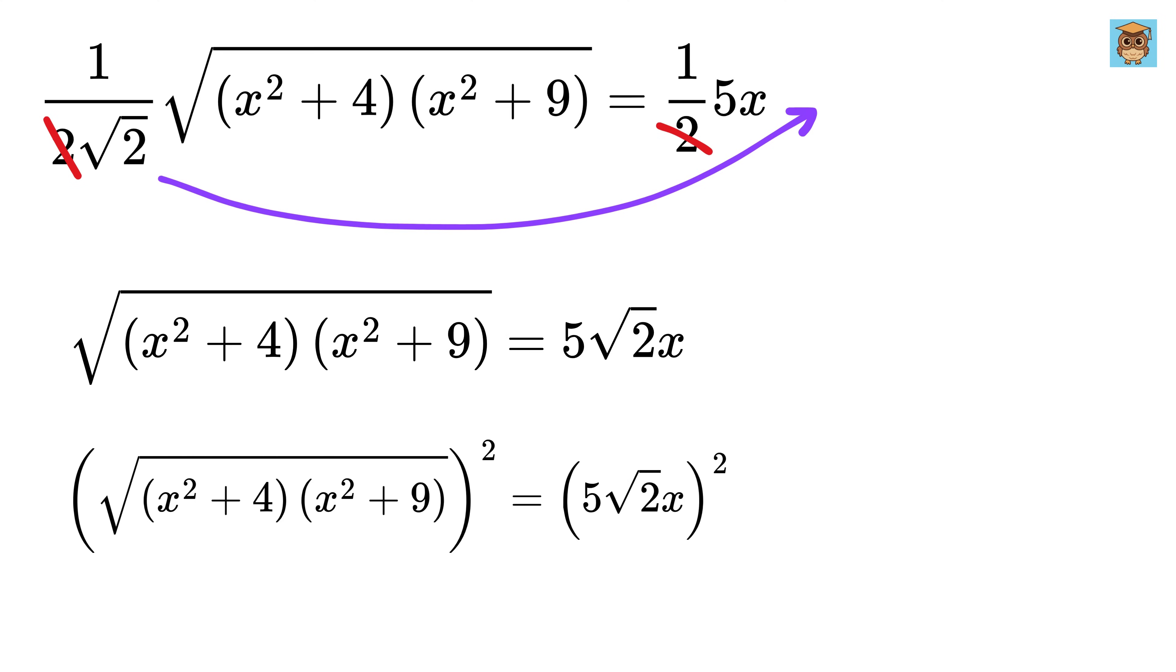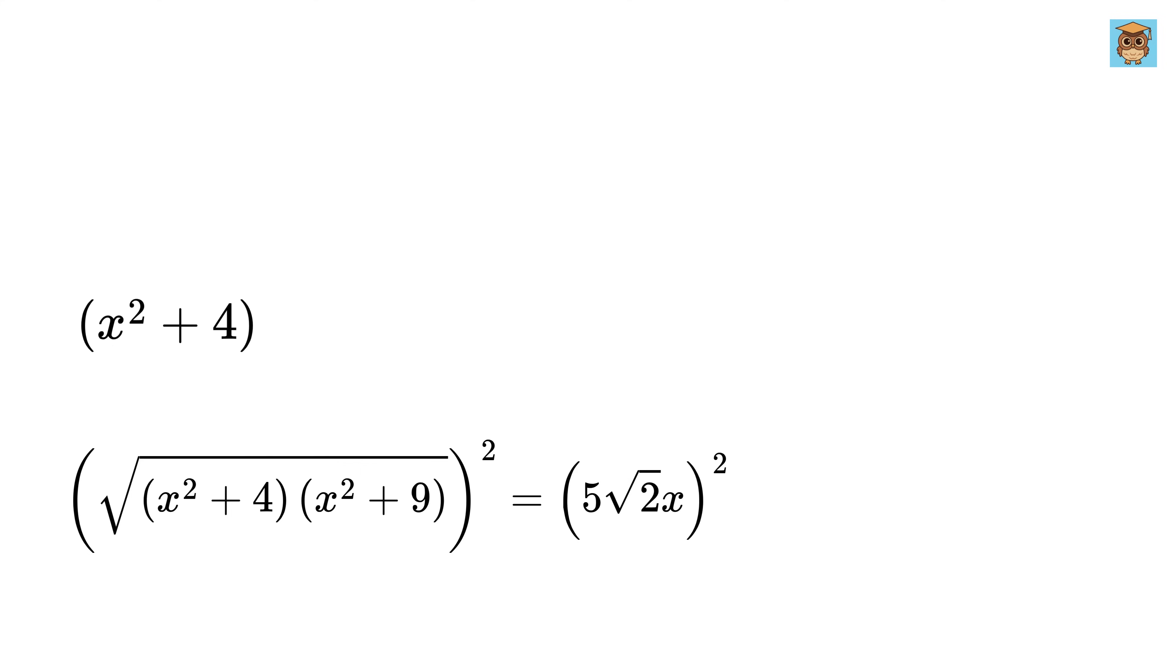Now square both sides to remove this square root. We get x squared plus 4 times x squared plus 9 equals square of this will be 25 times 2 x squared or 50 x squared.